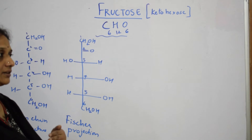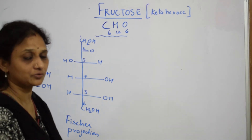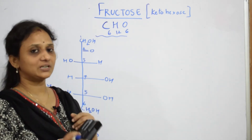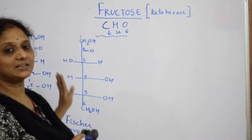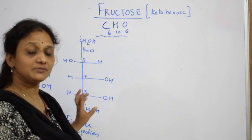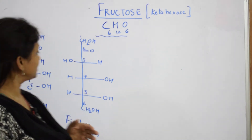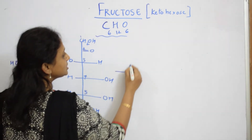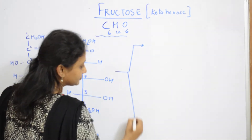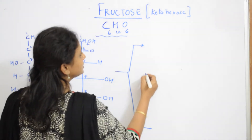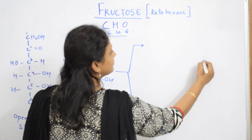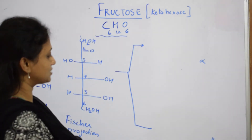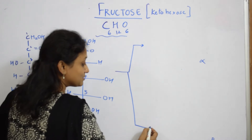Now when I write the cyclic structure of fructose — we have already written this for glucose, please go through that video. This particular chain exists in two forms: one is the cyclic alpha structure and one is the beta structure. Let us write the full names and discuss what alpha and beta mean.